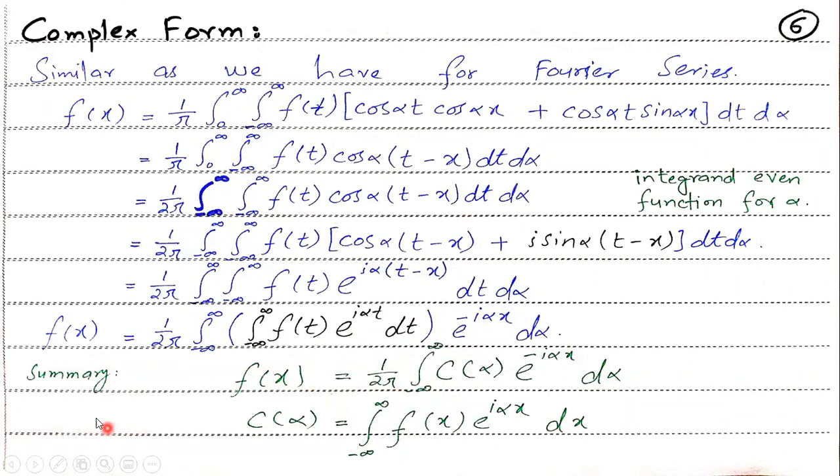After presenting this, you can write a complex form. So f of x is equal to 1 over 2 pi, minus infinity to infinity, C alpha e to the power iota alpha x d alpha. So d alpha is the integration. C alpha is the definition. So this is a complex form.